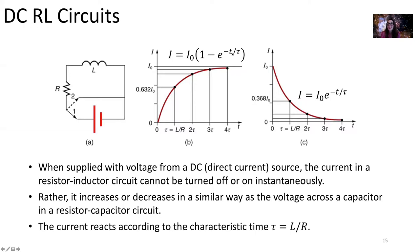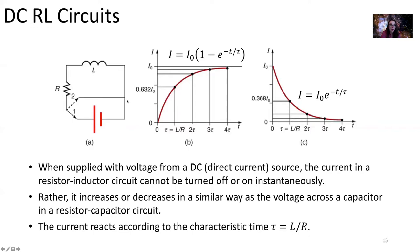Tau, our characteristic time of our RL circuit, is equal to the inductance divided by the resistance. The characteristic time for an RC circuit was the resistance times the capacitance. Once our inductor has fully stored up as much energy as it can in its magnetic field, we can disconnect it from the DC source and let the inductor discharge through our resistor. As it does that, the current in the circuit decreases according to a similar equation as the voltage across a capacitor discharging across a resistor.